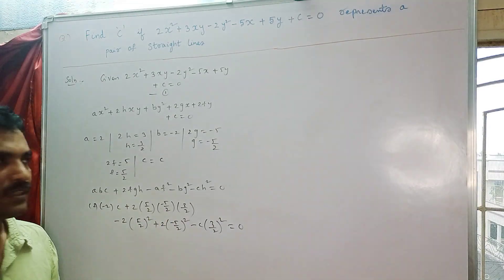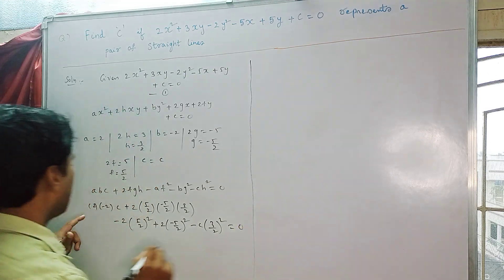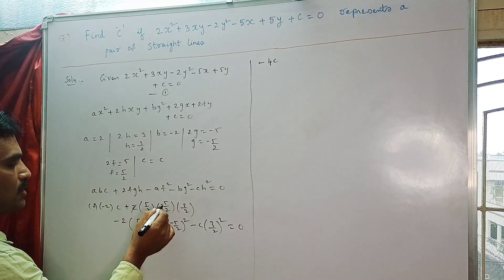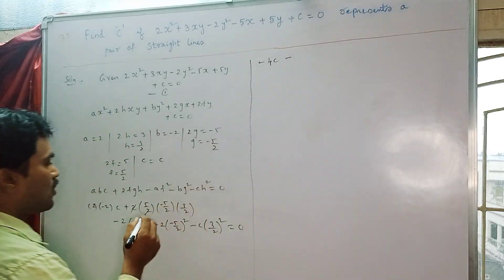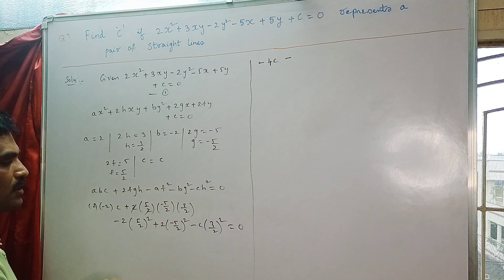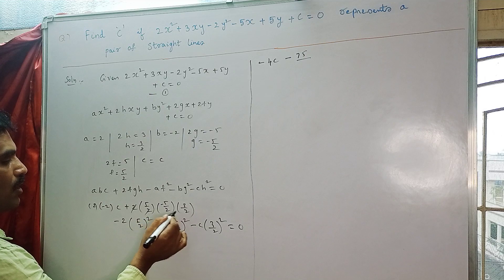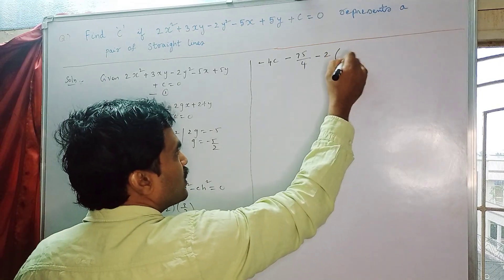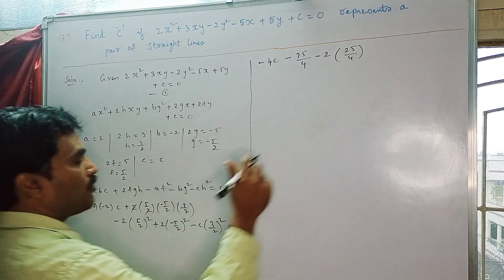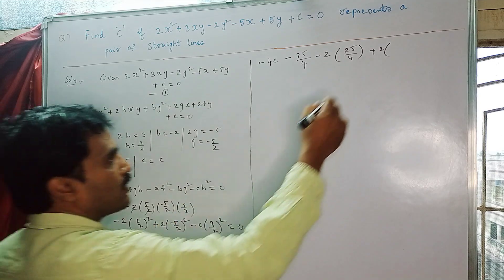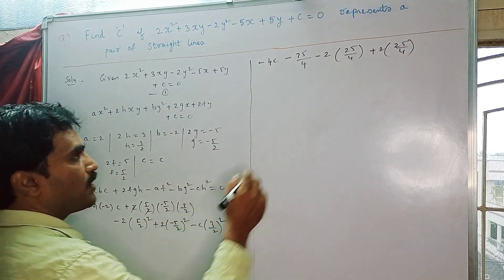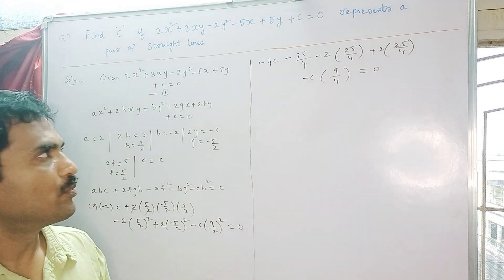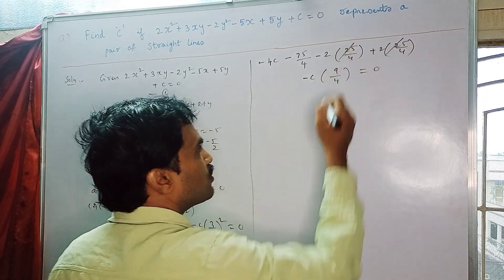Simplifying step by step: 2 × -2 gives -4c. For the 2fgh term, 5 × 5 = 25, and 25 × 3 = 75, giving -75/4 (since the signs give a negative). The -af² term gives -2 × 25/4 = -50/4, and the -bg² term gives +2 × 25/4 = +50/4. These two terms cancel each other out.